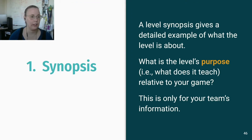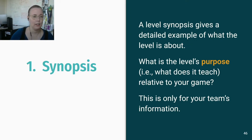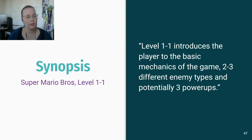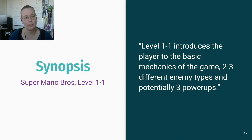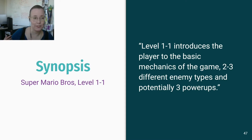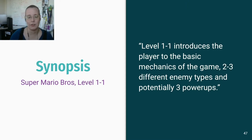The synopsis is a level synopsis that gives a detailed example of what the level is about — basically a description of the level. What is the level's purpose? What does it teach relative to your game? This is only for your team's information. For example, the synopsis of Super Mario Brothers level 1-1 is that it will introduce the players to the basic mechanics of the game, two or three different enemy types, and potentially three power-ups.